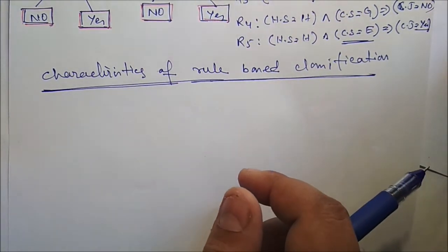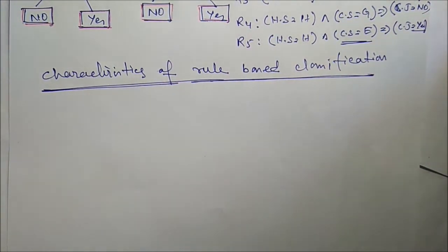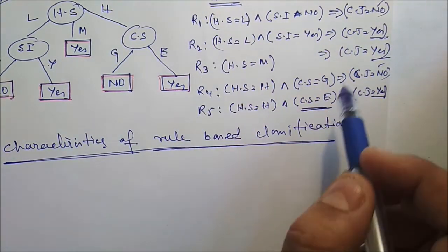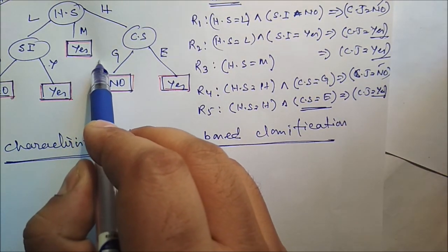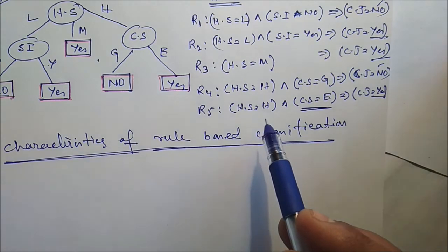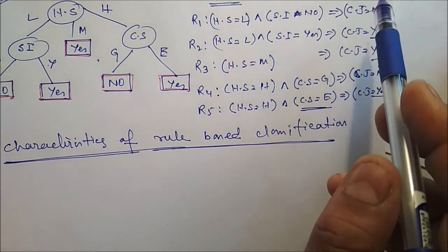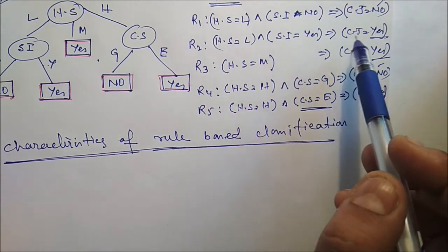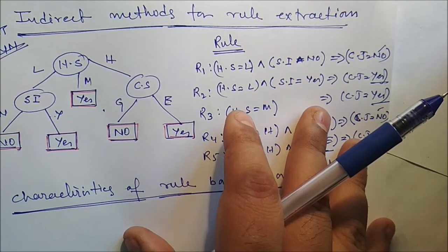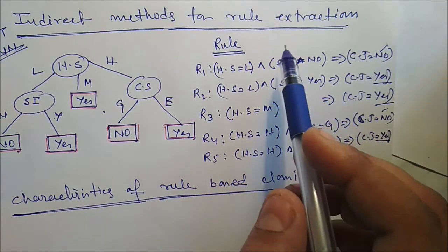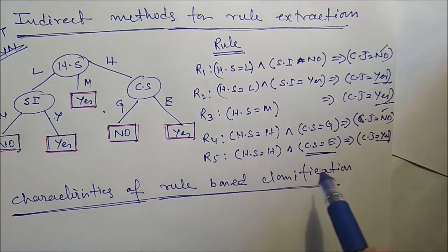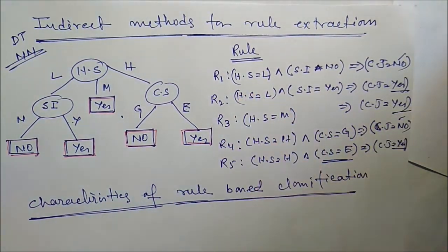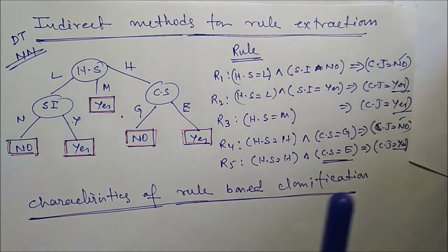The characteristics of rule-based classification: first, the expressiveness of a rule set is almost equivalent to that of a decision tree, because a decision tree can be represented by a set of mutually exclusive and exhaustive rules. Rule-based classifiers are generally used to produce descriptive models that are easier to interpret — you can easily understand the rules and identify the consequence from the preconditions. Thank you very much.